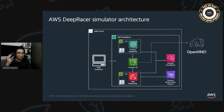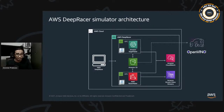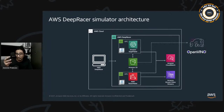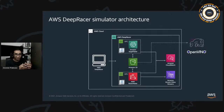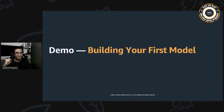Once your model is ready, you can download it and plug it into your DeepRacer device if you have one — but again, you don't need the device to start learning. On the hardware side, DeepRacer is powered by Intel OpenVINO to enable model optimization for fast inference on the edge.